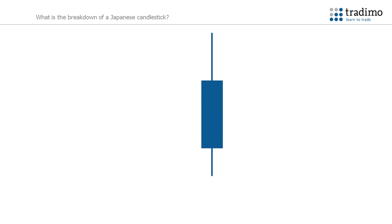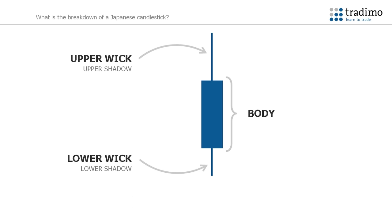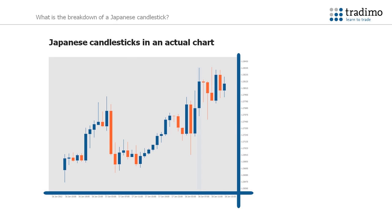The rectangle in the middle is called the body. The thin line on the top of the body is called the upper wick, or upper shadow. The line coming out at the bottom is called the lower wick, or lower shadow. This is again how it looks in a real chart. You see the date and time on the bottom, and the price on the right-hand side of the chart.